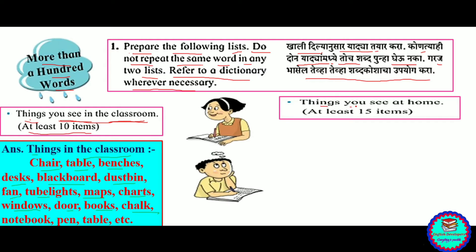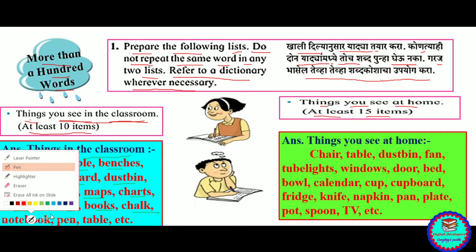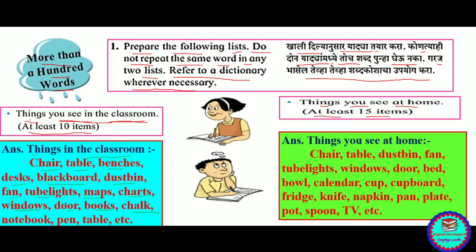Things you see at home — at least 15 items. Chair, table, desk, bin, tube lights, windows, bed, calendar, cup...